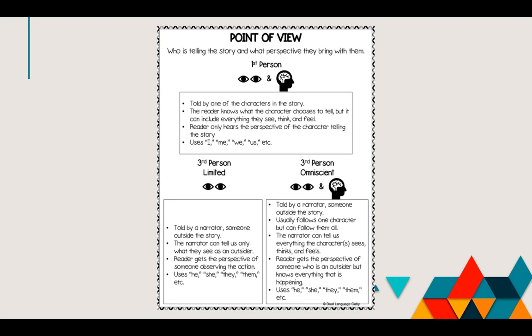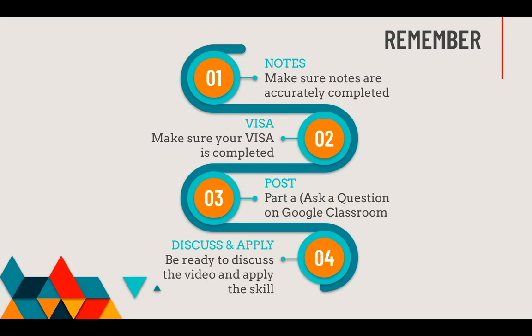Now that your notes are done, make sure they're accurate. Go back and double-check that you got everything right. Make sure your visa is completed, because that helps you reflect on what was said and what you learned. Make sure you post your Part A — your ask-a-question — on Google Classroom or wherever your teacher has asked you to do so, and be ready to discuss the video and apply the skill. Be ready to read a text and decide who is the narrator, what point of view it's told from, and how that affects the story — like, what do you know about the characters based on this point of view? Remember, applying it always means taking the skill a little bit further, which enhances your learning and comprehension.